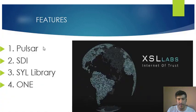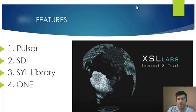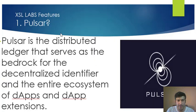In this video I will be specifically looking deep into the main features of XSL Labs. There are four main features of the XSL Labs ecosystem which will work together to form a great product to make user experience easy and secure their identity in a decentralized way. The first feature is Pulsar, second is SDI, third is SYL Library, and the fourth one is called One.